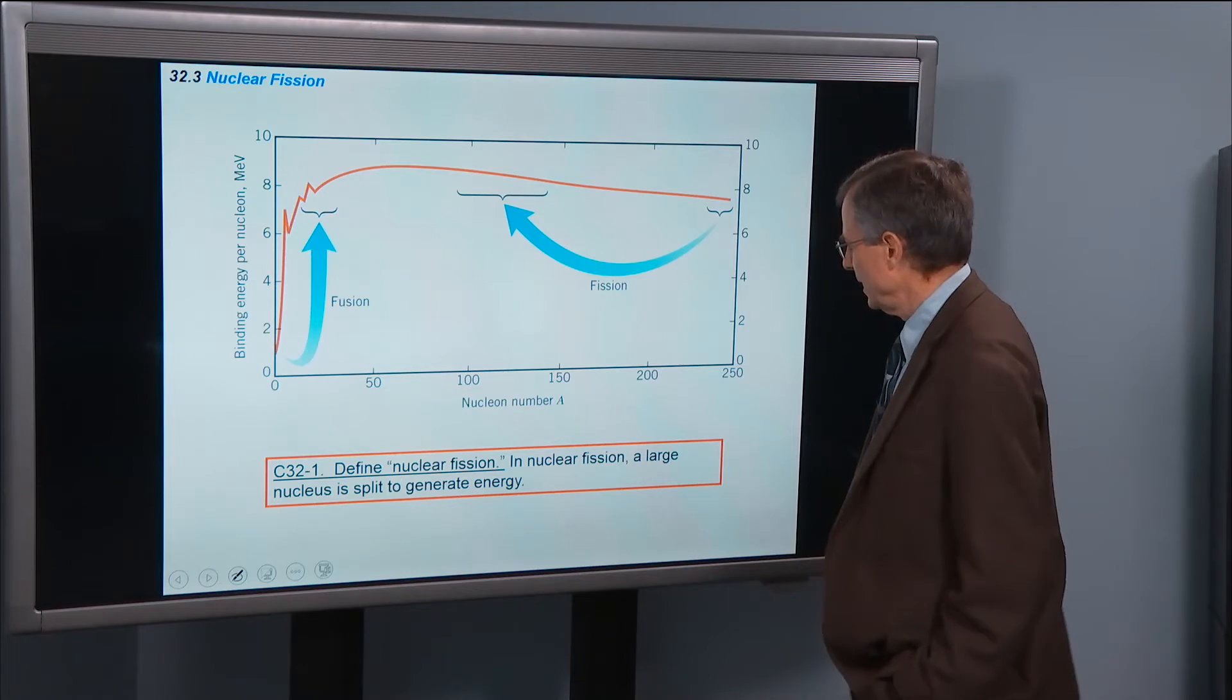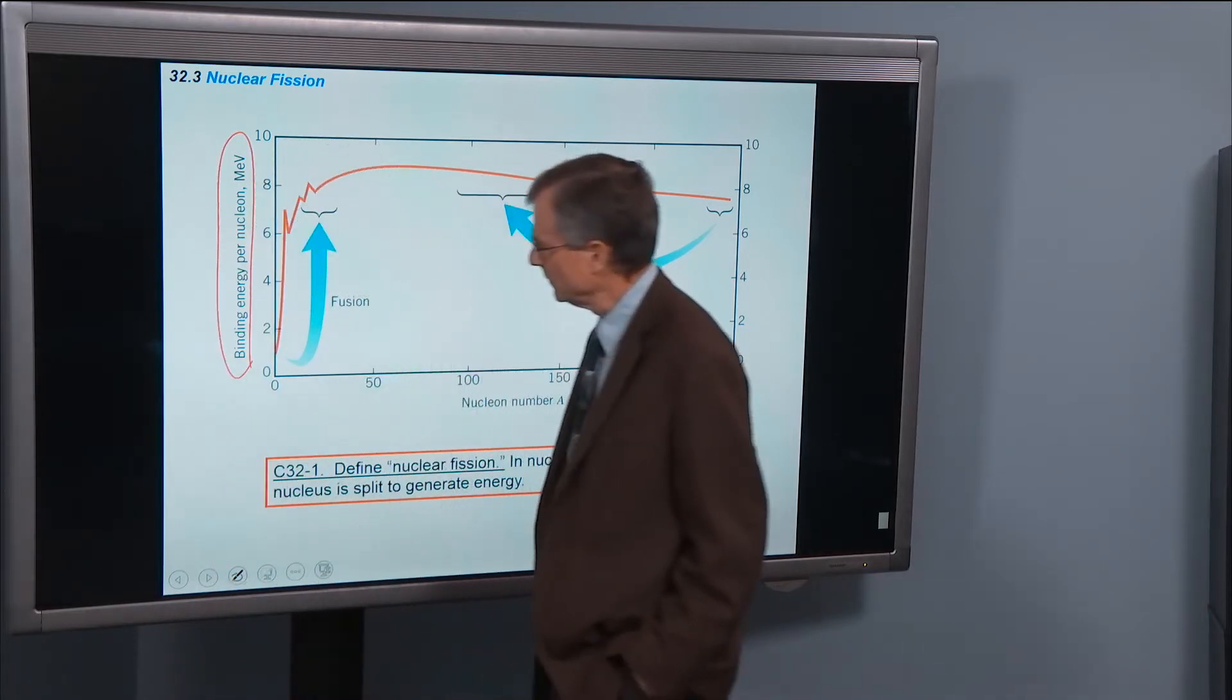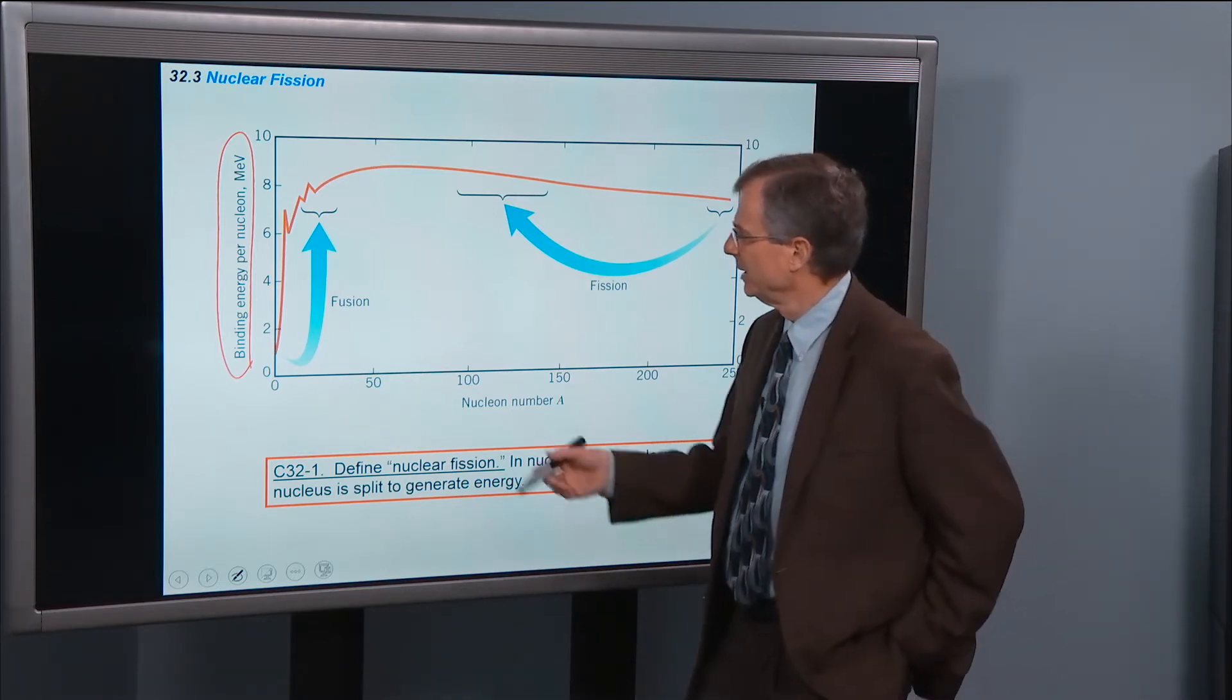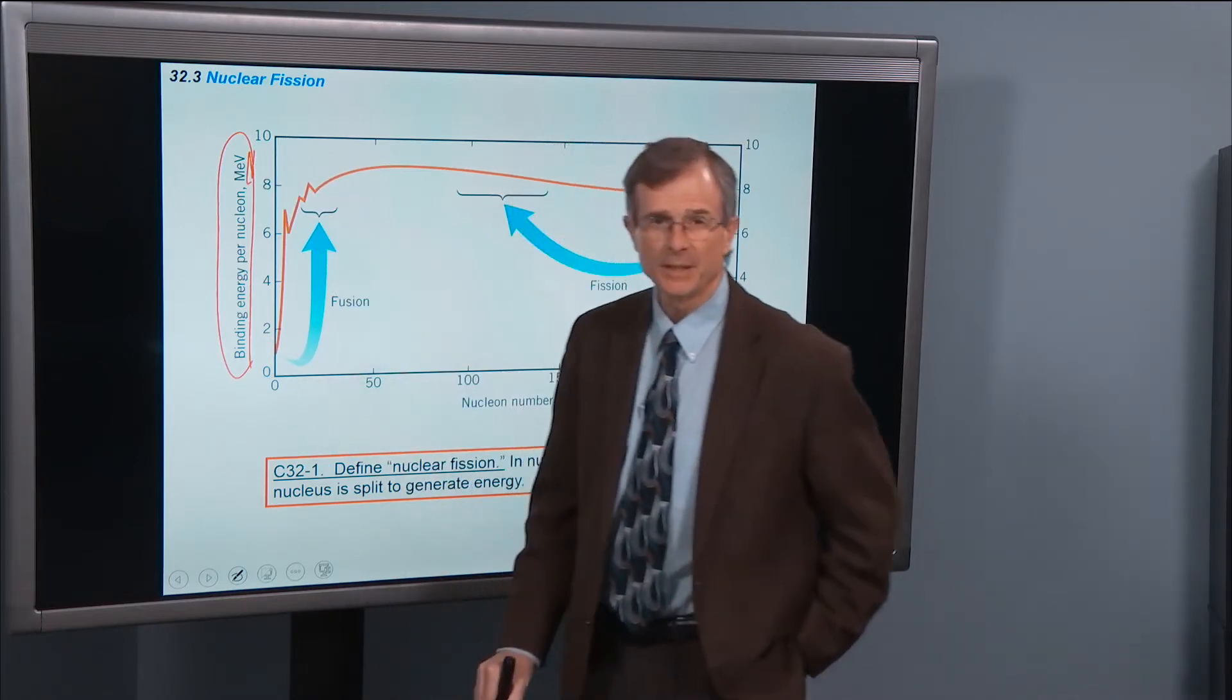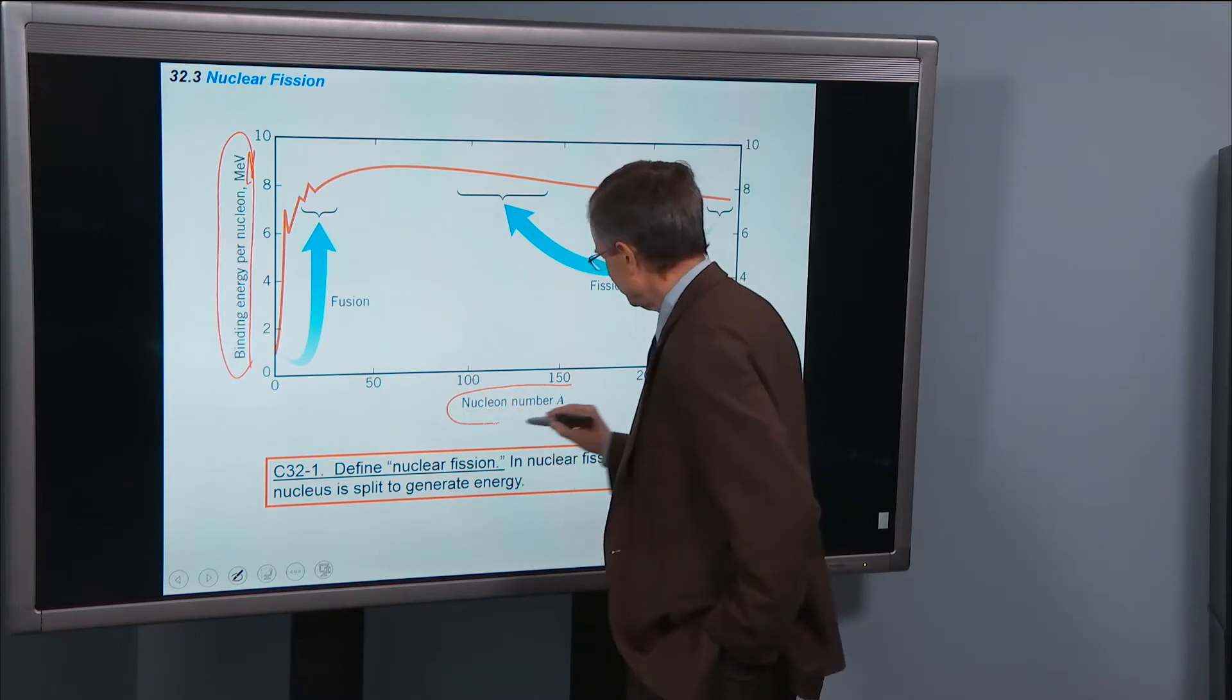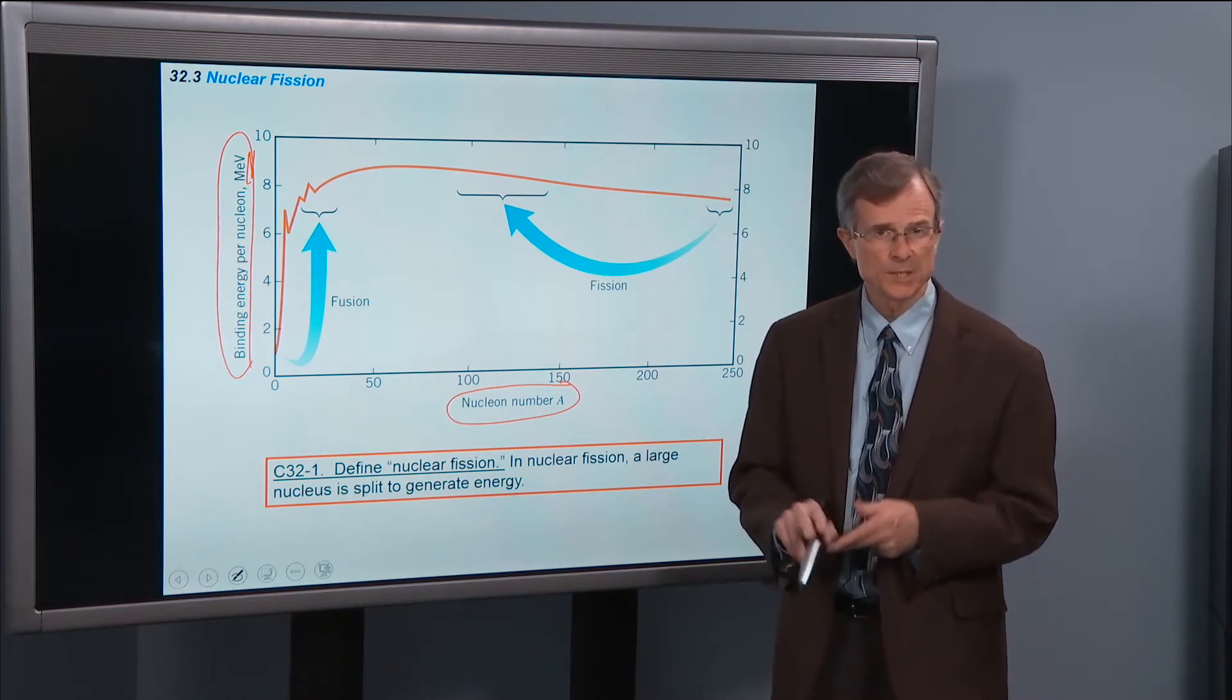So first, nuclear fission. The idea with fission—this is a binding energy per nucleon. And we've seen this before, and we've actually calculated binding energies per nucleon, which can be around 7 or 8 MeV, a million electron volts per nucleus, or per nucleon in a nucleus. And this is the nucleon number, the number of protons plus the number of neutrons inside of a nucleus.